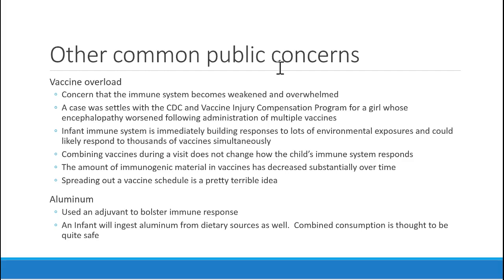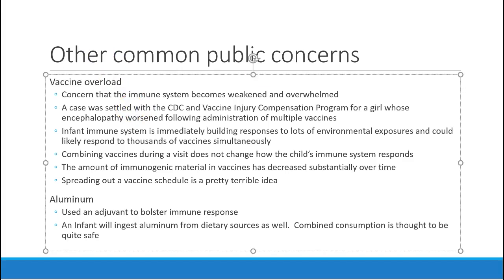Vaccine overload is the concern that the immune system becomes weakened and overwhelmed if you give too many vaccines. This sparked controversy because of a case settled with the CDC's Vaccine Injury Compensation Program — a government program to compensate victims for various vaccine reactions. In that case, a girl had encephalopathy that worsened following administration of multiple vaccines. There was never real scientific proof vaccinations caused it, but the CDC couldn't definitively prove they didn't, so they settled. That sparked the question: are we giving kids too many vaccines too quickly?